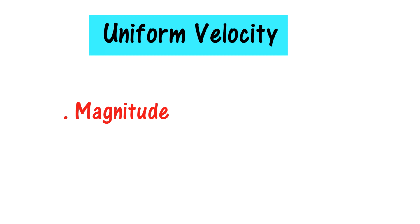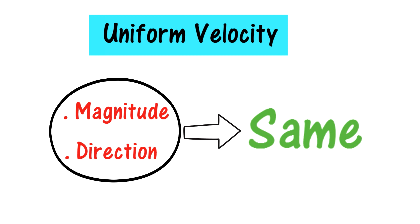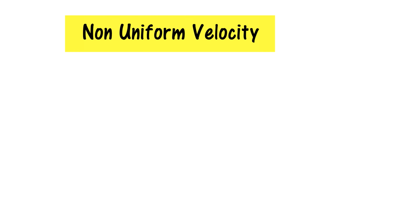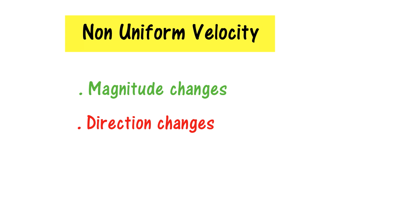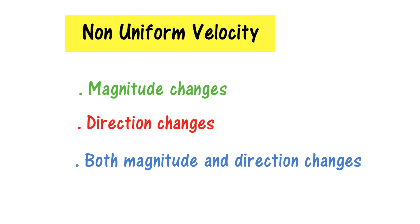To define: uniform velocity is when both magnitude and direction remain the same. Non-uniform velocity is when the magnitude changes, or the direction changes, or both magnitude and direction change. This was all about uniform velocity and non-uniform velocity.